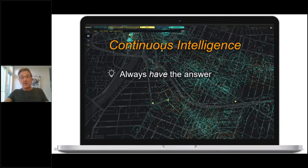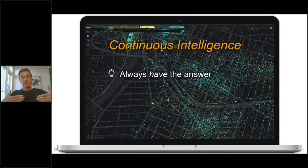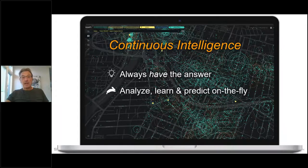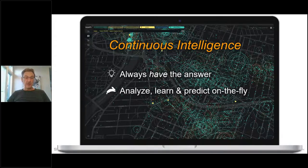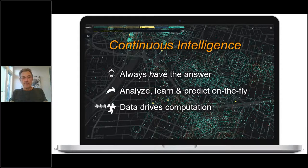So I'm going to call that continuous intelligence. We always have to have the answer. What I mean is that when data arrives, we compute. We don't wait for a query or a UI refresh or something like that or a big data batch process. We compute when data arrives. That means we have to analyze, learn, and predict on the fly. In this case, I literally mean it. We have to figure out the model, build it, and learn on the fly.